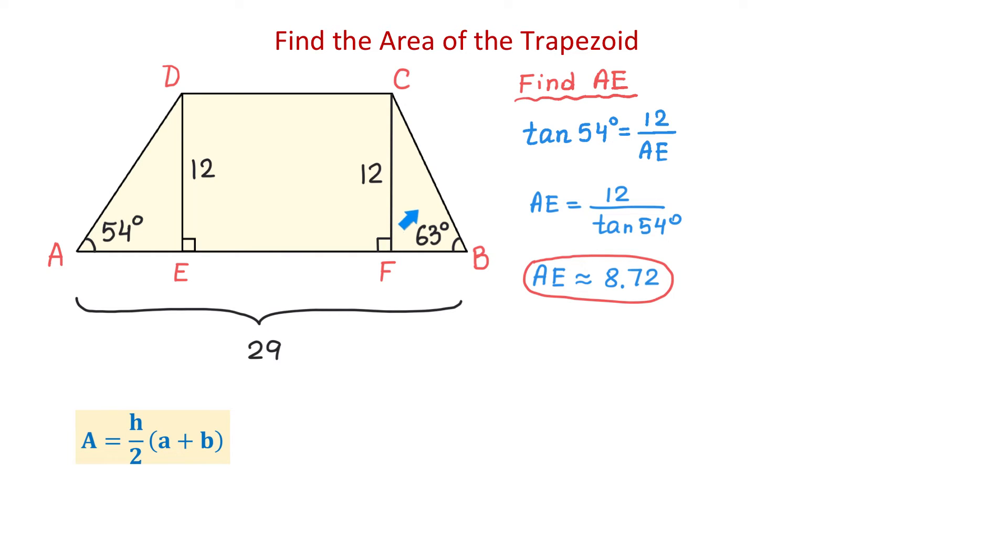Now, in the right triangle to the right, we also have an angle and the opposite side, and we have to find the adjacent side. Then, again, we will use the tangent function, and we will write that tangent of 63 degrees equals the opposite side, 12, divided by the adjacent side, F, B.